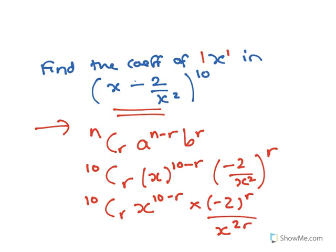Now what we need to do is collect the number parts together. So that's the 10Cr, the minus 2 to the r, and then put x to the 10 minus r on x to the 2r.